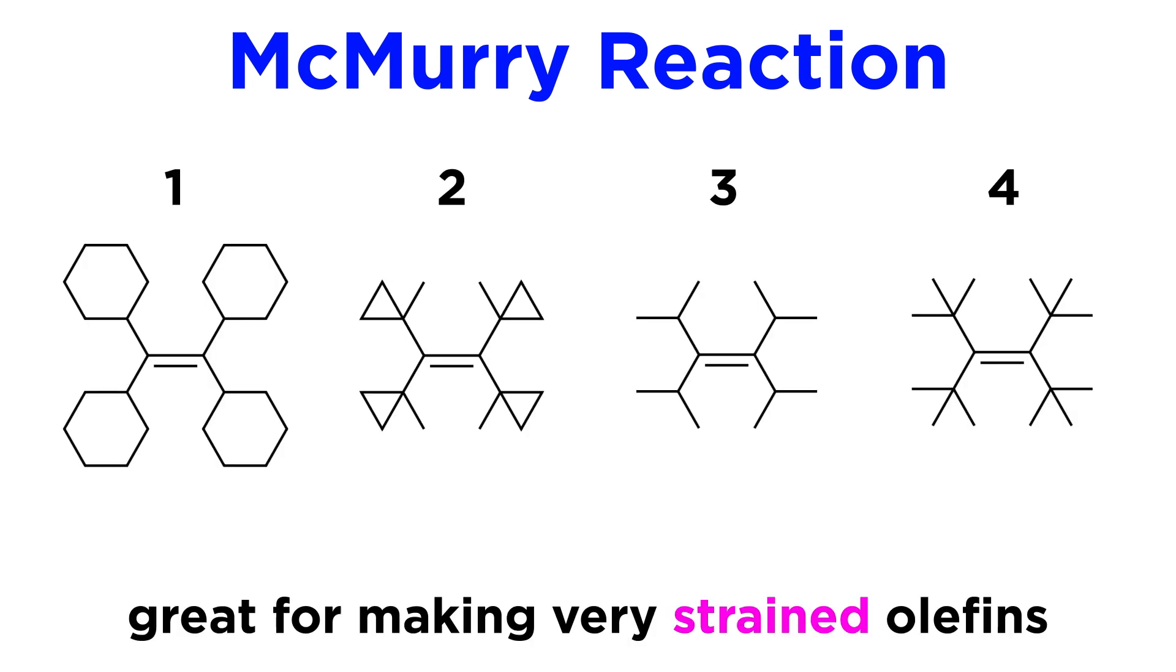One detail that should also be mentioned is that the McMurry reaction is uniquely suitable for the preparation of very strained olefins, meaning olefins which have four very bulky substituents. These are particularly difficult to prepare by other means. For example, olefins 1 through 3 have been prepared quite easily via the McMurry reaction.